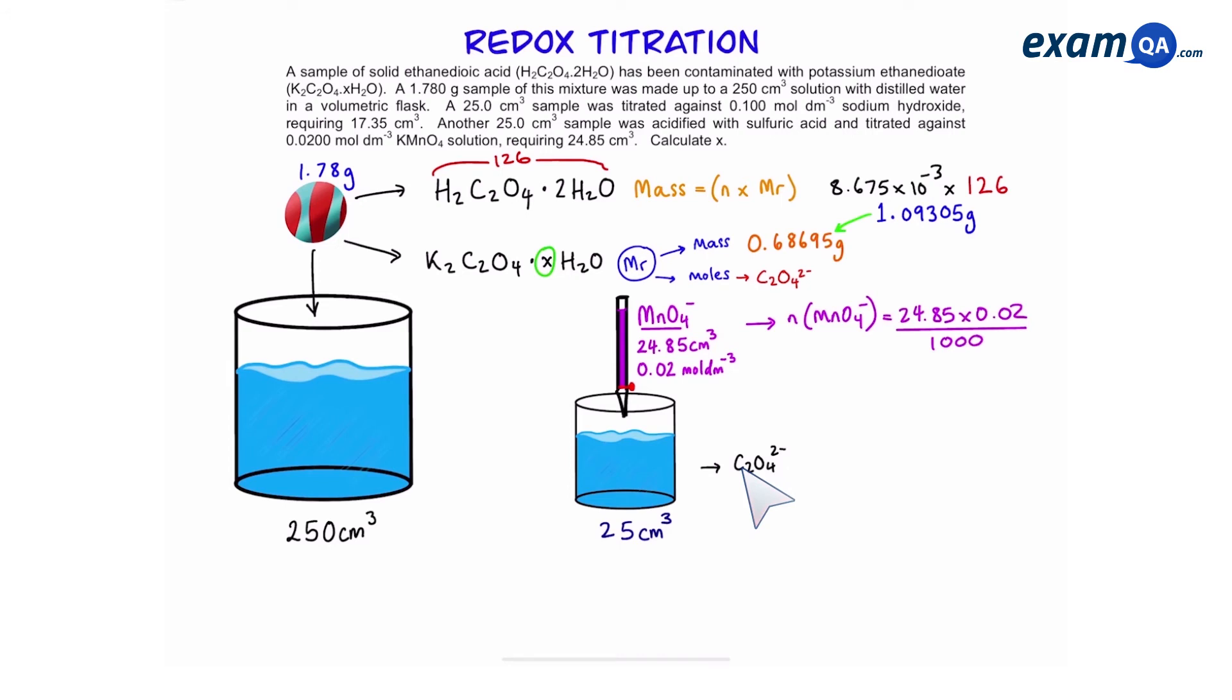First we'll start to work out the moles of manganate which gives us 4.97 times 10 to the power of minus 4. If you've seen the introductory video you should know your ratios that manganate to ethane dioate is a 2 to 5 ratio. So we're going to take the moles of manganate divided by 2 and times it by 5 to work out the moles of ethane dioate in this 25 centimeter cubed sample.